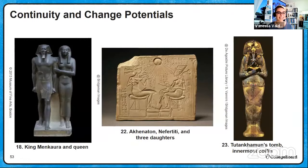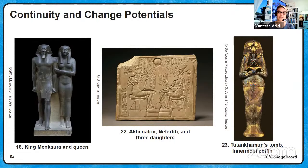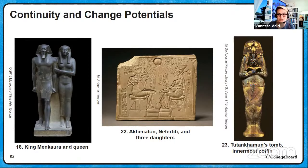Other works that are potentials for a question about continuity and change include Akhenaten, Nefertiti and his three daughters from the Amarna period — Akhenaten is really the only pharaoh who upset the canon of the human body in Egyptian art. You could also look at Mughal architecture like the Taj Mahal, Angkor Wat, Wilfredo Lam's The Jungle, Cézanne's Mont Sainte-Victoire, and so forth. There's a variety of works that draw on traditions but also represent significant changes.